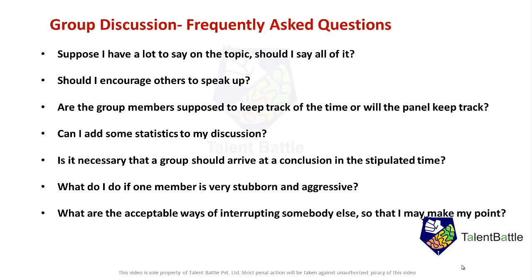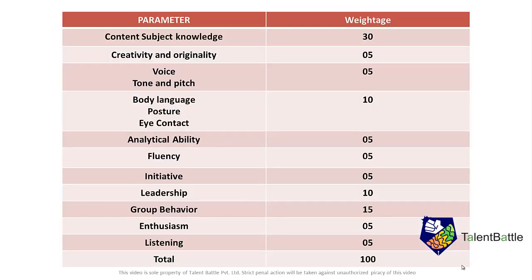Those are the general doubts students usually have about group discussion. Let me quickly tell you the parameters evaluated during a GD and how marks are typically divided out of 100: content and subject knowledge — 30 marks; creativity and originality of points — 5 marks; voice, tone, and pitch — 5 marks; body language, posture, and eye contact — 10 marks; analytical ability — 5 marks; fluency — 5 marks; initiative like introduction or conclusion — 5 marks; leadership skills — 10 marks; group behavior — 15 marks; enthusiasm — 5 marks; and listening skills — 5 marks.